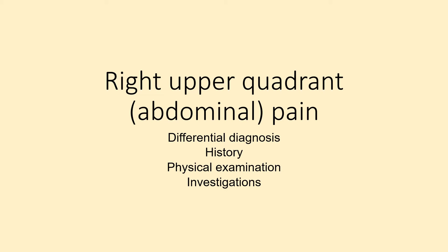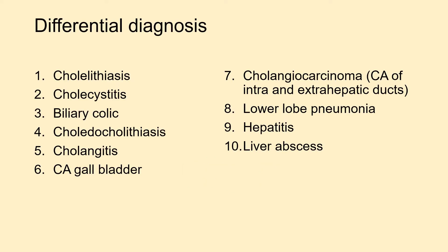Today we are going to study right upper quadrant abdominal pain. First we will discuss the differential diagnosis, then the history, medical examination, and the investigations. The differential diagnosis of right upper quadrant abdominal pain includes several important conditions.